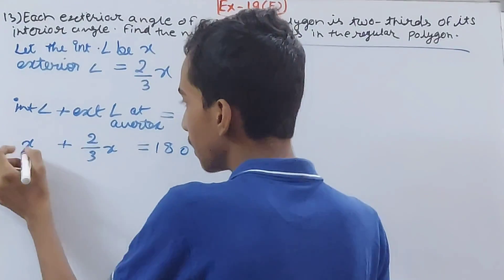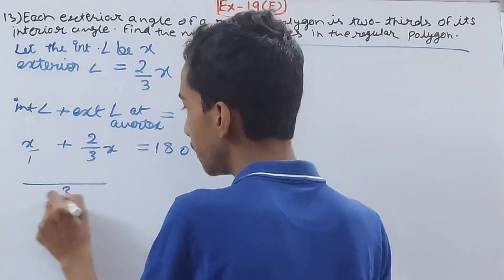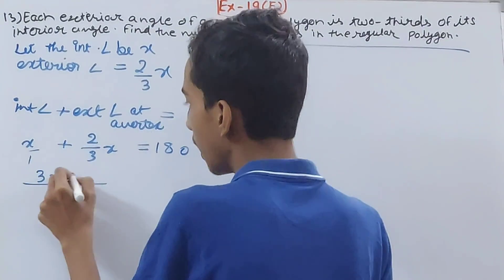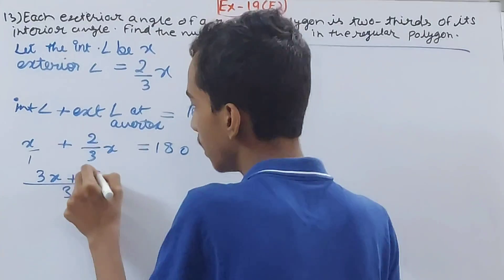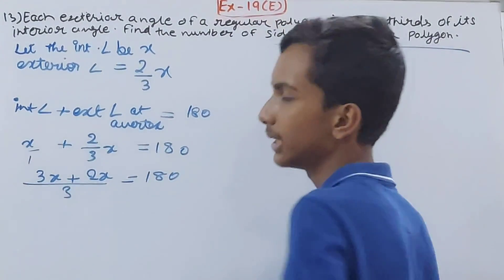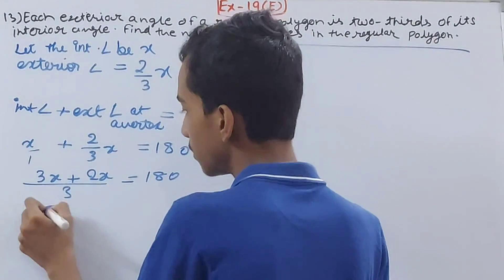You can add this. Take the LCM here. It will be 1 × 3/3, so 3x, and here already the denominator is 3, so just write 2x. This equals 180. Let's solve this equation. 3x plus 2x is 5x.